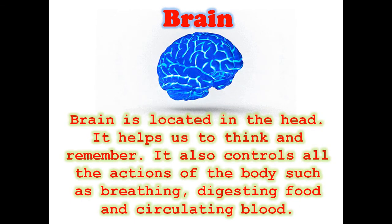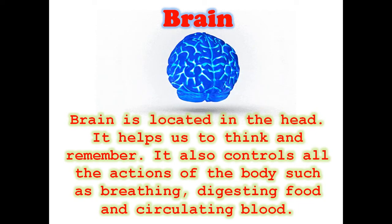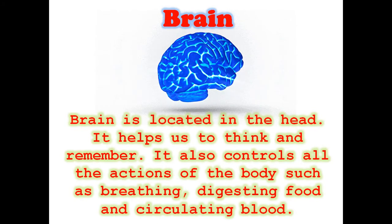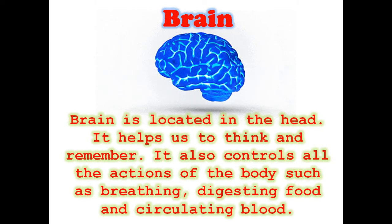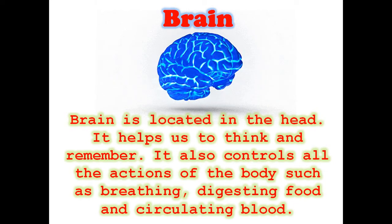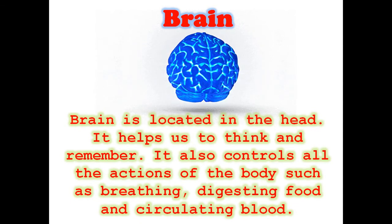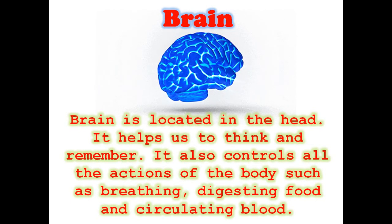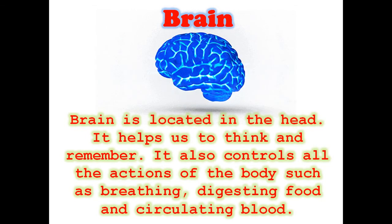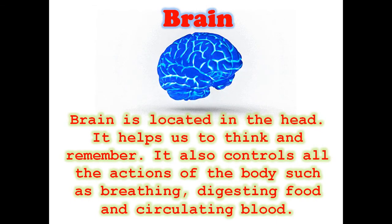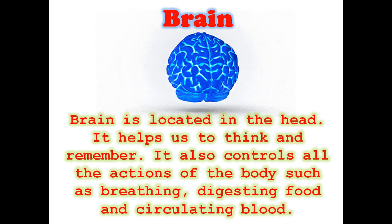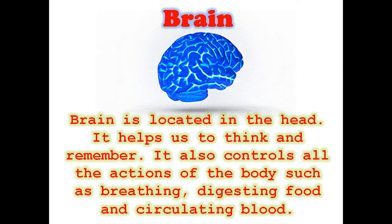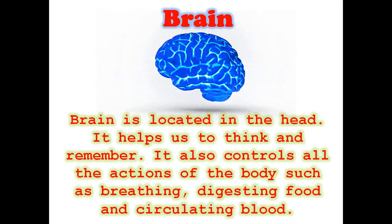Our brain receives messages from the sense organs. You learned about sense organs in class 2 — there are 5 sense organs: eyes, tongue, ears, nose, and skin. The brain receives messages and acts on them. For example, if I want to take an apple and eat it, the brain sends a message to my hand, my hand takes the apple and puts it in my mouth. So the brain controls every part of the body.